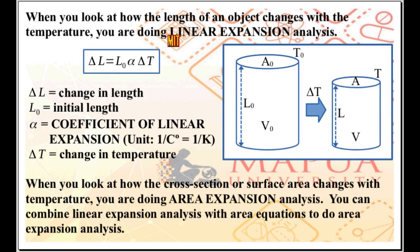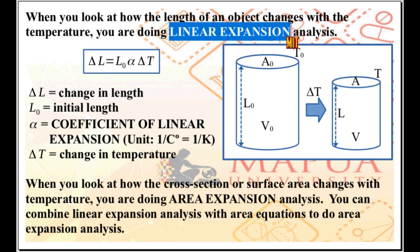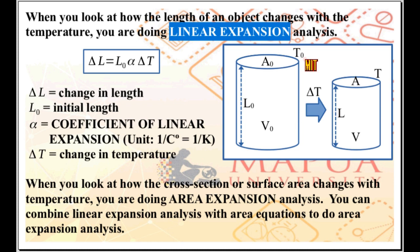First, let's have linear expansion. When you look at how the length of an object changes with the temperature, you are doing linear expansion analysis. Say you have a cylinder at initial temperature T-naught. Initial length of the cylinder is L-naught, initial cross-section area is A-naught, and initial volume of the cylinder is V-naught.